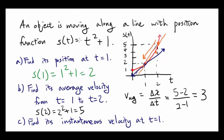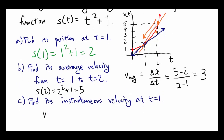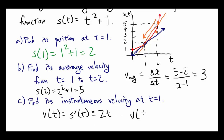Since S(t) = t² + 1, the velocity can be found by taking the derivative of S(t), because the derivative gives you the slope of the tangent line. The derivative of t² + 1 is 2t. So the velocity at t equals 1 is 2 times 1, which equals 2.